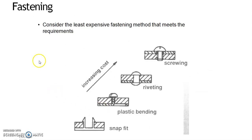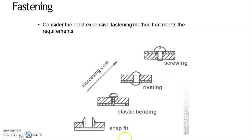For fastening, consider the least expensive fastening method that meets the requirement. Snap fit is generally the cheapest fastening arrangement. Moving from snap fit to plastic bending, the cost increases; similarly cost rises for riveting, and further for screwing. So whenever fastening is required, you can choose from snap fit, plastic bending, riveting, and screwing — with screwing being the most expensive compared to snap fit.